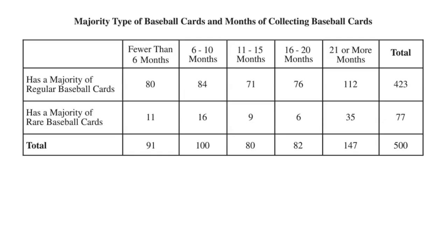Across the top we see the months. Now you'd think months is a quantitative variable, but not when we put it into categories: fewer than six months, six to 10, 11 to 15, 16 to 20, or 21 or more months. The other variable is whether you collect regular baseball cards as the majority of your collection or rare baseball cards as the majority.